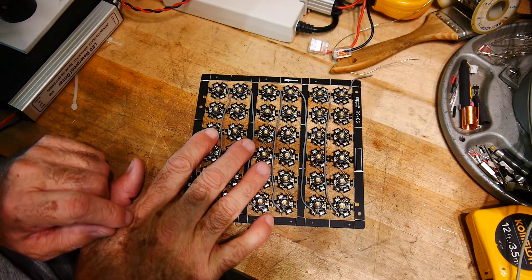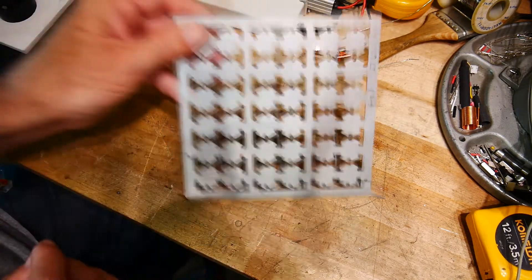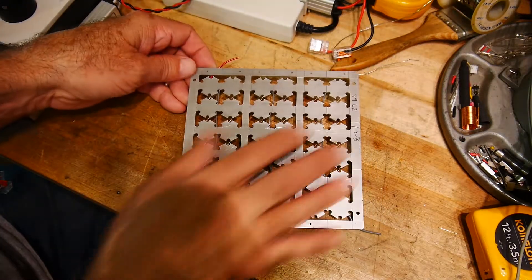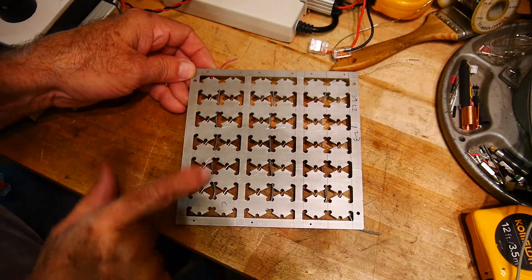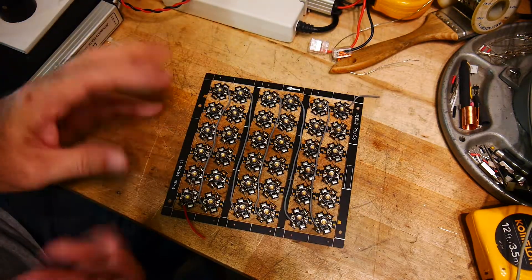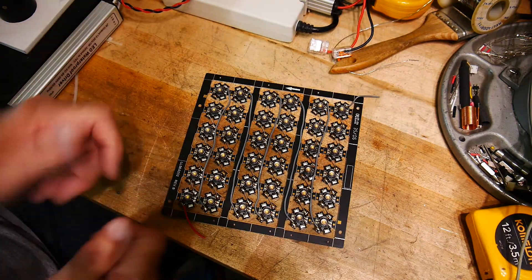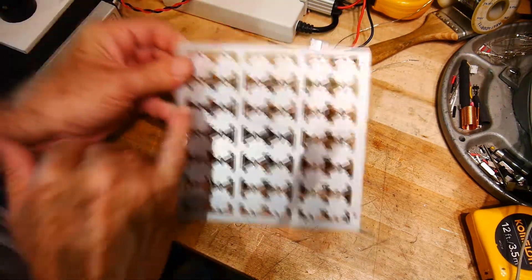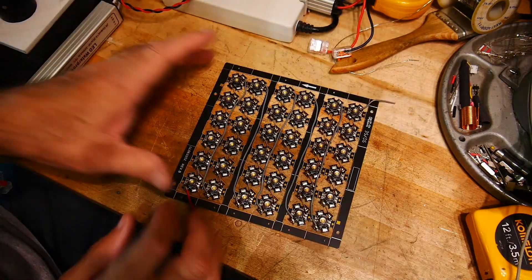I don't know if this is a production panel or just testing or something like that. But it had one, two, three, four, five, six. So 36 LEDs. And then before they were sold, they were broken up. You can just flex these things and snap them. There's score lines on them and they just come apart.